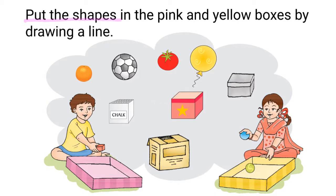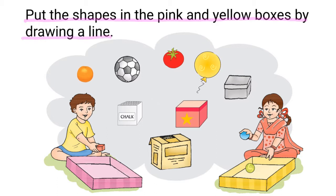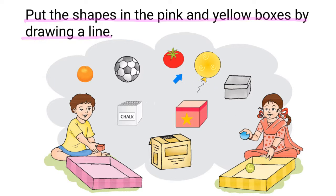Put the shapes in the pink and yellow boxes by drawing a line. In this activity, we have to put all the square shaped objects in the pink box and all the round shaped objects in the yellow box. Let's begin.